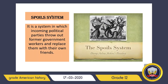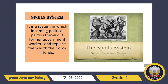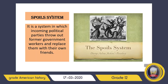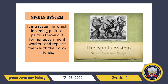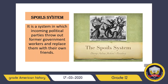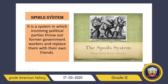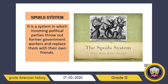We begin with the spoil system. Jackson's inauguration began a new political era, and in his campaign he had promised to reform government. He started by replacing many government officials with his supporters, and this practice of giving government jobs to political backers became known as the spoil system. In simple words, it is a system in which an incoming political party throws out former government workers and replaces them with their own supporters.